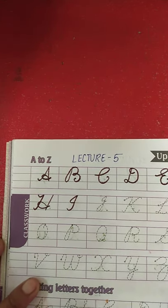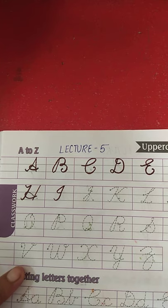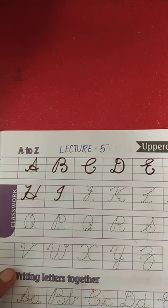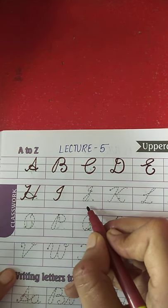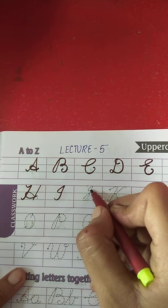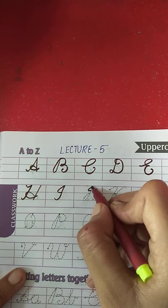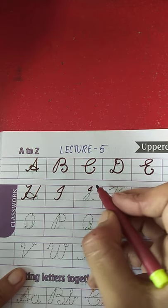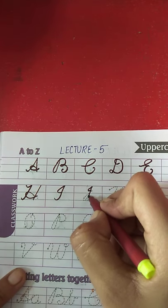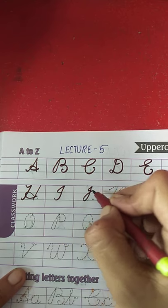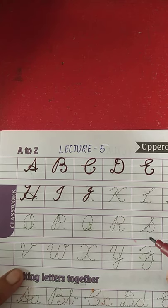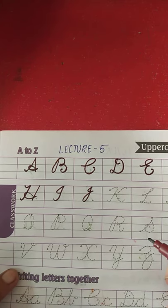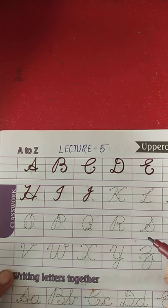I for igloo ke baad kaunsa letter aata hai? Letter J — J for joker. Now put your pencil on the dot and draw a small curve, a slanting line, and again a curve. This is letter J — J for joker. What is the spelling of joker? J-O-K-E-R. Joker.